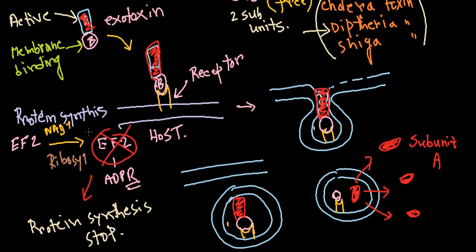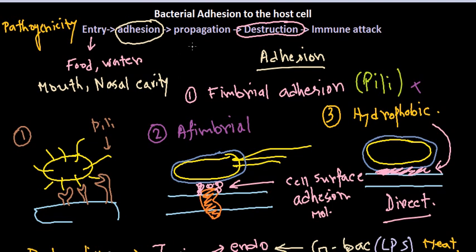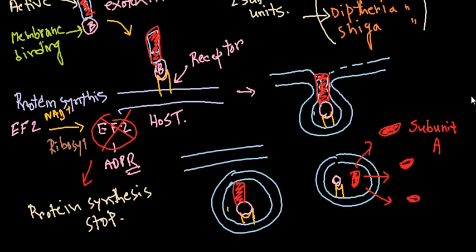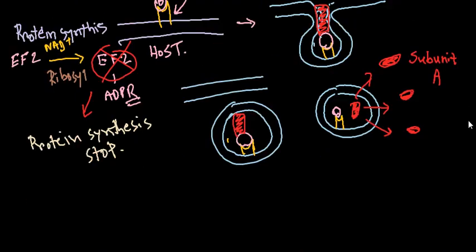Similarly, cholera toxin ADP-ribosylates the G protein, and shiga toxin blocks amino acid binding so that protein synthesis is not possible. In most cases, exotoxins block protein synthesis using their active A subunit. As a result of proteins not being synthesized, the host cell dies. These are the sequential steps: entry, adhesion, propagation, then destruction by endo- or exotoxin — with exotoxin activity being much more common.